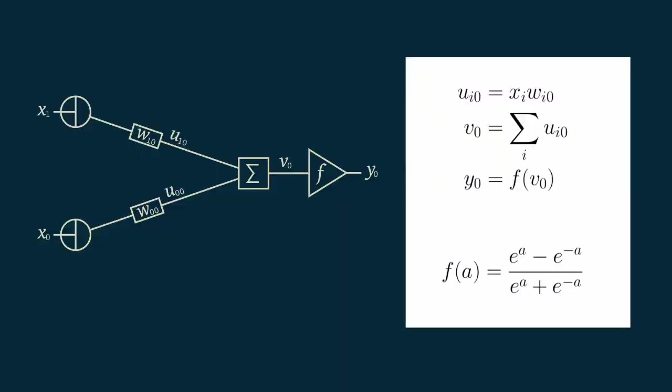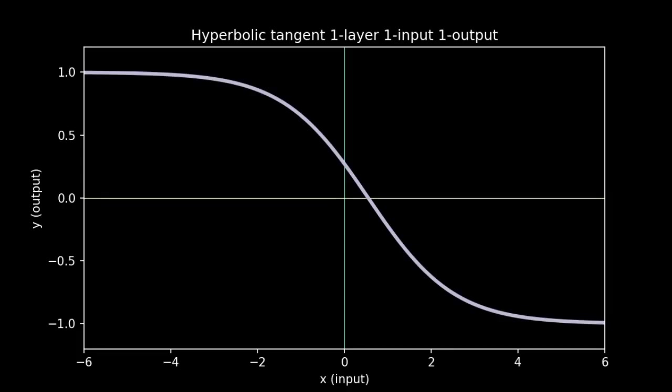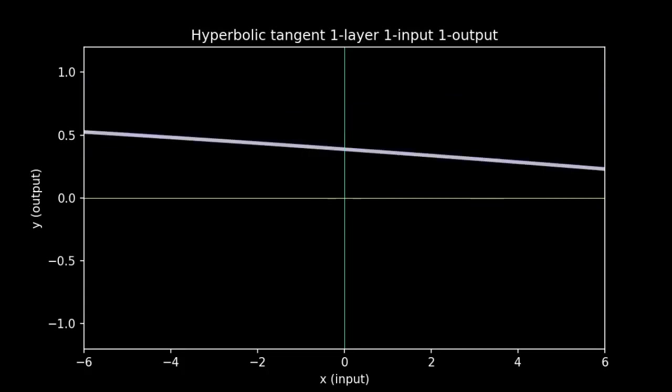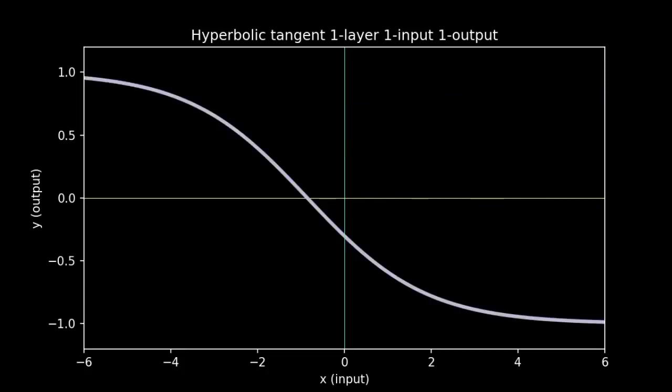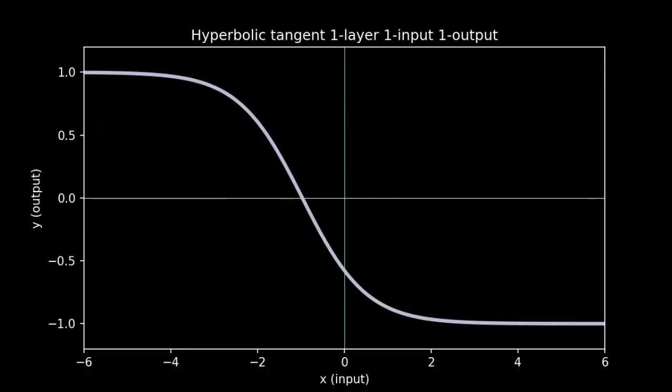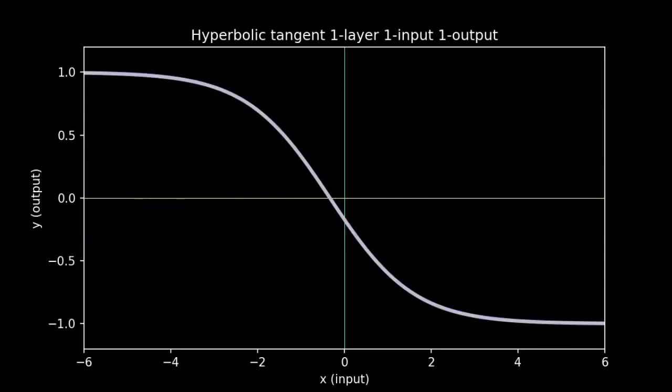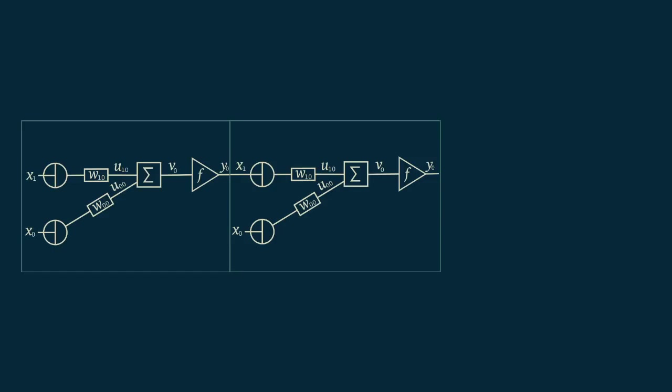Another popular non-linear function is the hyperbolic tangent. It's closely related to the logistic function and can be written in a very symmetric way. We can see, when we choose some random weights and look at examples, that hyperbolic tangent curves look just like logistic curves, except that they vary between minus one and plus one.